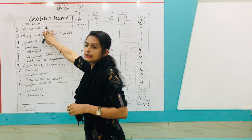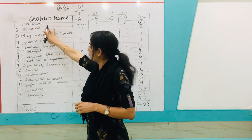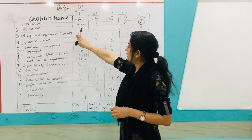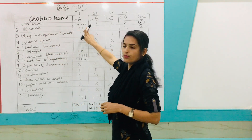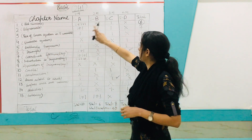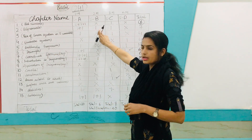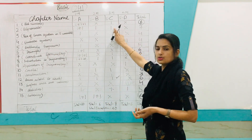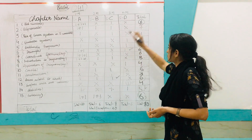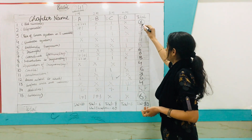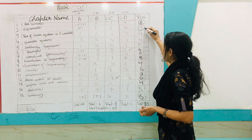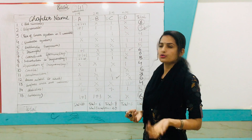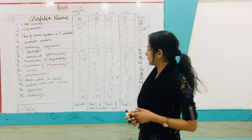Next, Chapter 2, Polynomials — there will be two questions of one mark each, one question of two marks, and one question of three marks. The total for this chapter is seven marks. This is a very important chapter, so you have to prepare it carefully.